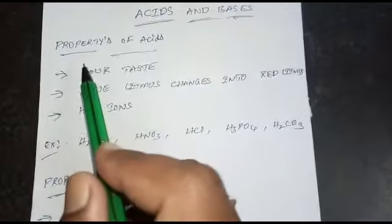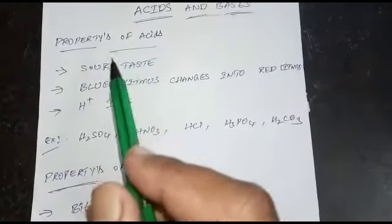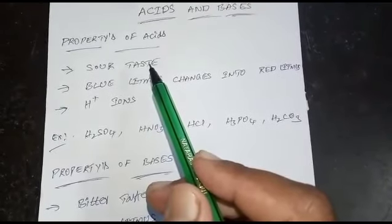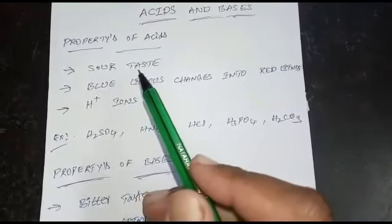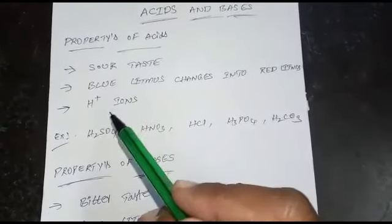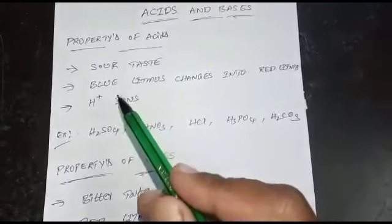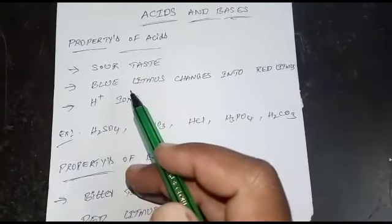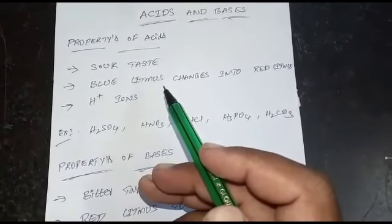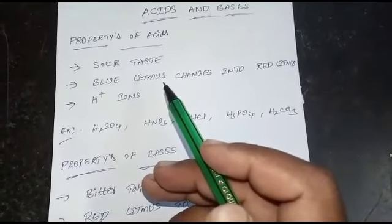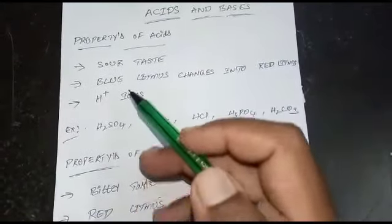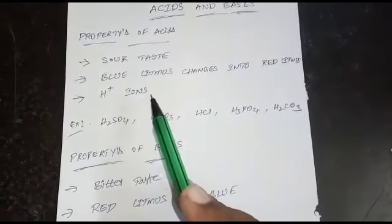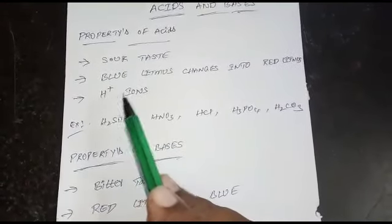What are the properties of acids? Acids have a sour taste — every acid contains a sour taste. All acids change blue litmus into red litmus. All acids contain H⁺ ions — hydrogen ions — which we will discuss in higher classes.